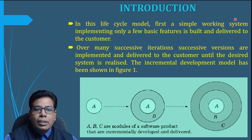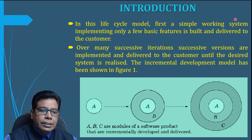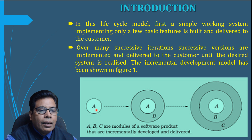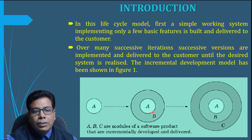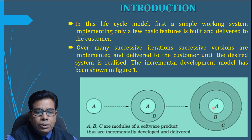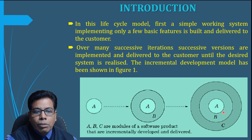As you can see in the figure, A, B, and C are the modules of the software product. A is the first version or first build. From this build we develop B, which is larger than A — so there is an increment in A that gives us B. Then B is incremented and we get C. In this way the software product is developed incrementally and delivered to the customer.